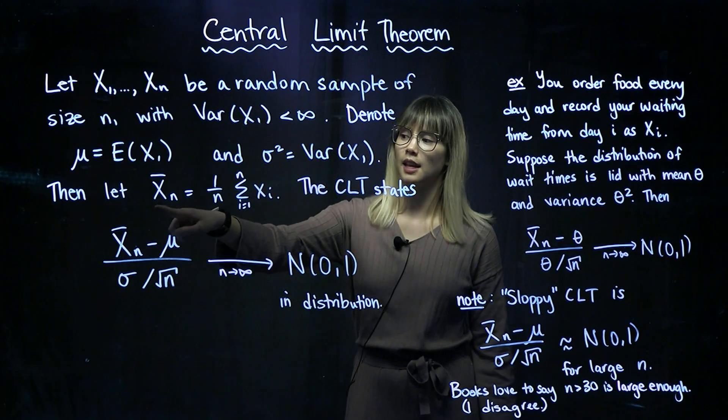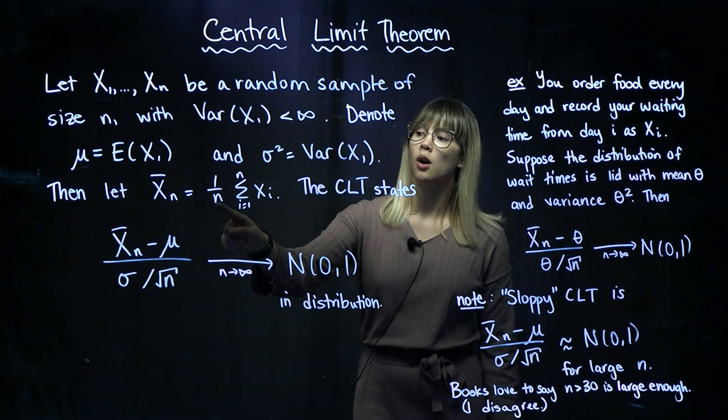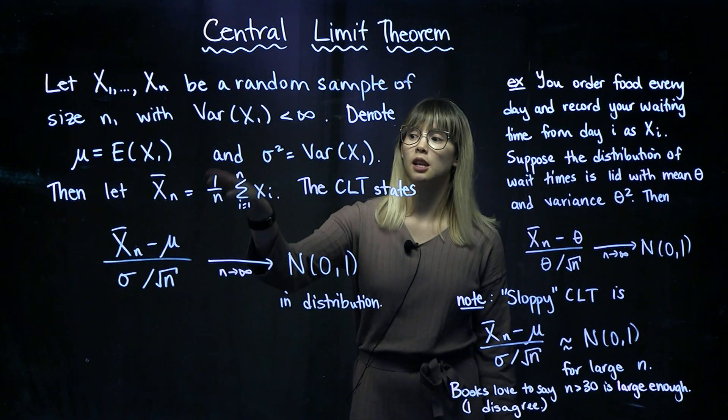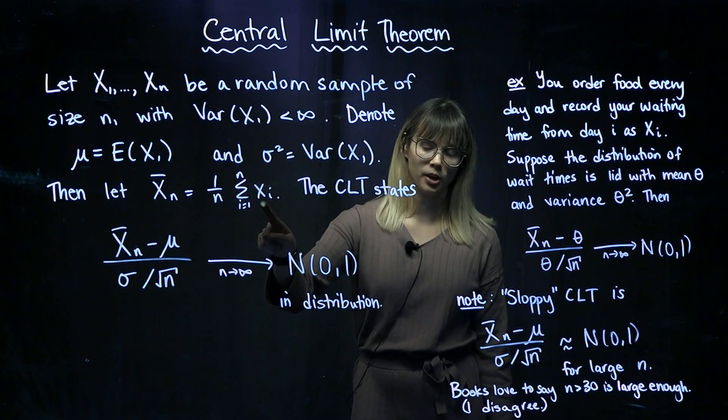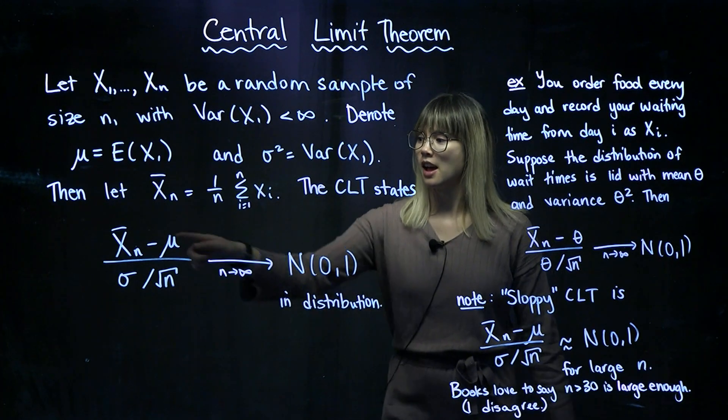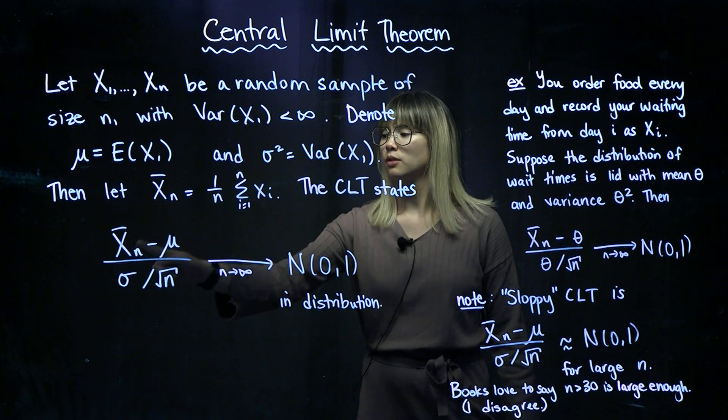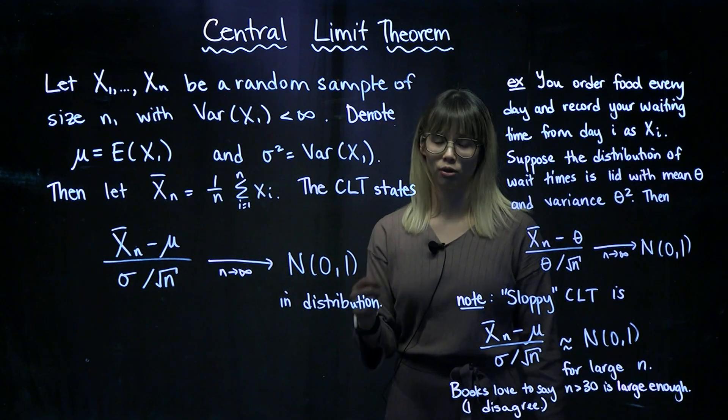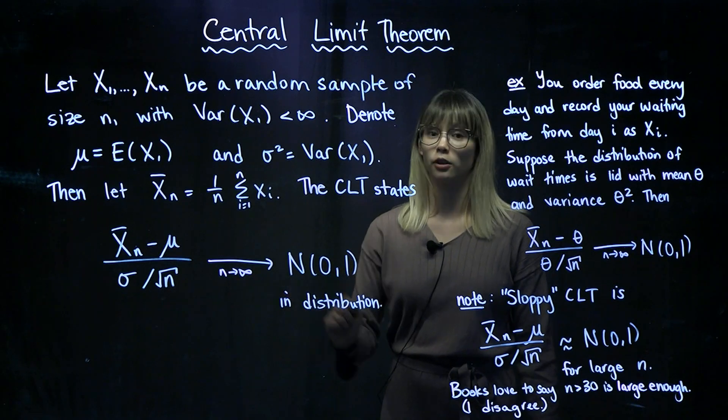Now let's say that x bar n is equal to 1 over n times the sum of the xi. So in other words, it's a sample mean from the first n random variables. Then the CLT says that x bar n minus mu divided by sigma over root n is going to converge to a standard normal distribution as n increases to infinity.